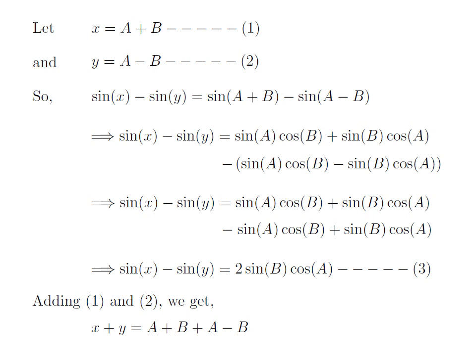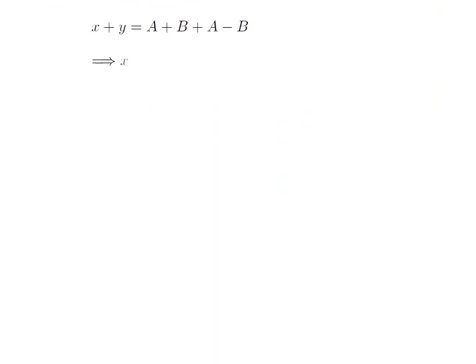So, we got x plus y is equal to A plus B plus A minus B. In the above expression, B minus B will cancel out. So, we are left with A plus A. So, we have got x plus y is equal to 2 times A. Let's take 2 to the left. In the above expression, we get A is equal to x plus y divided by 2.